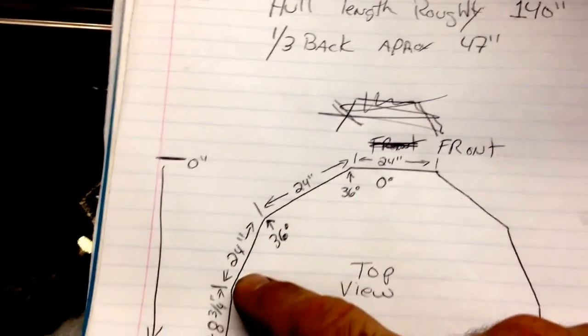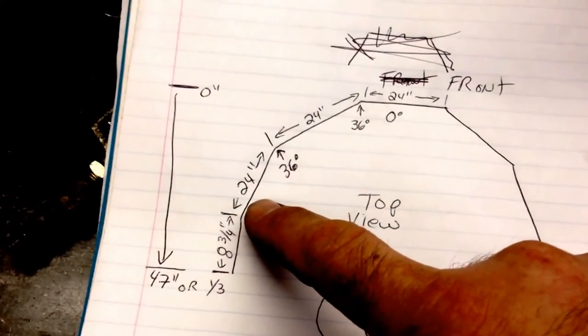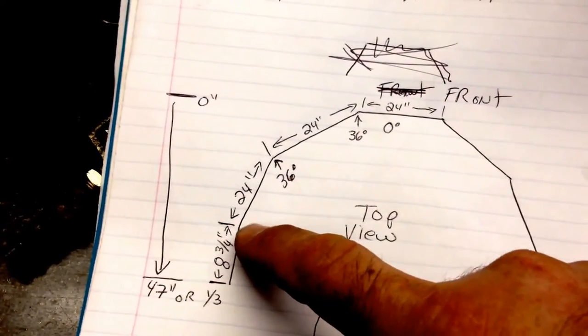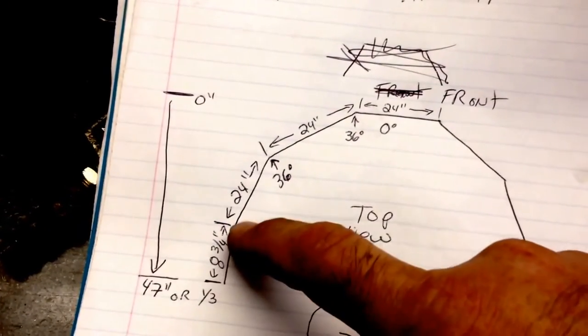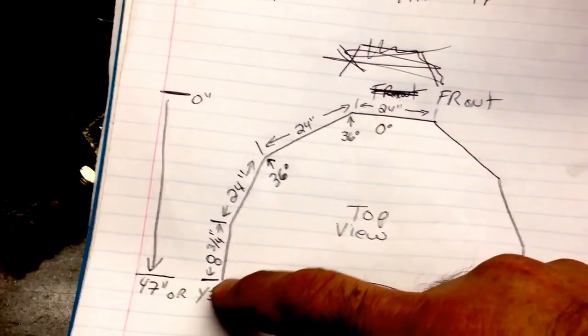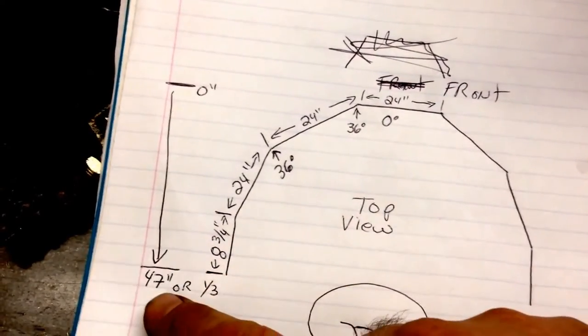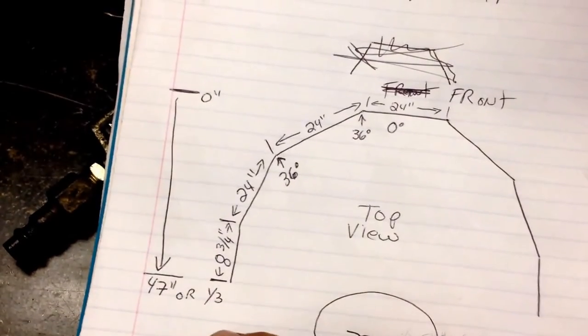Another 36 degrees, travels another 24 inches. Then it goes straight to the combing, going all about straight. Goes eight and three quarters of an inch back to a third of the 47 inches.